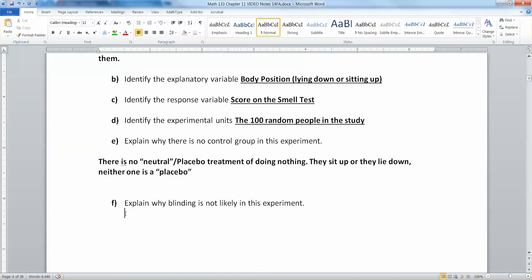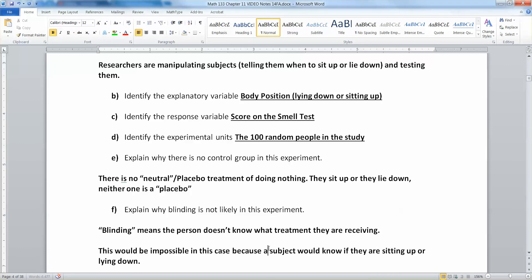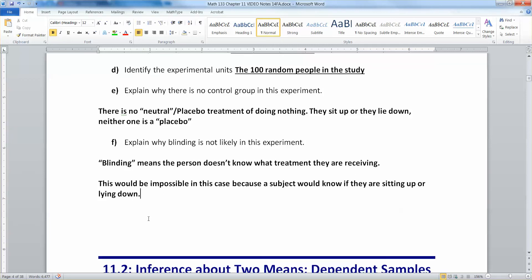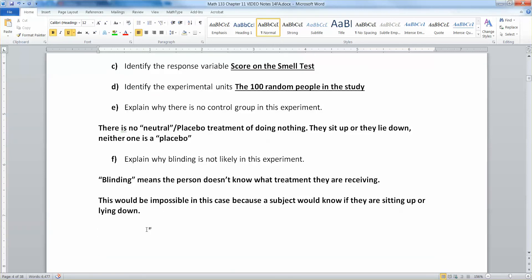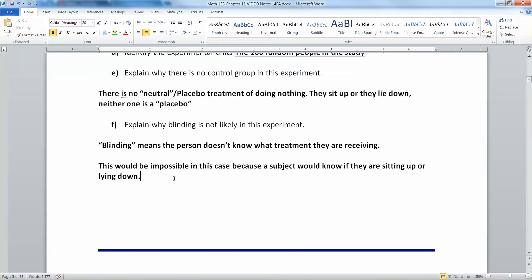Now let's explain why blinding is not likely. Because in general, people know if they're sitting up or lying down. You can kind of tell. So blinding means that the person doesn't know what treatment they are receiving. But that would be impossible in this case. Because in general, a person knows whether they are sitting up or lying down. The only exception to that might be somebody with some kind of strange vertigo. But as long as you are not in that strange case, you're going to be able to tell. That's okay though. Sometimes blinding is impossible.